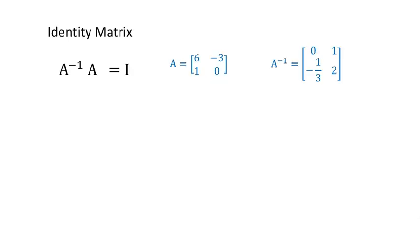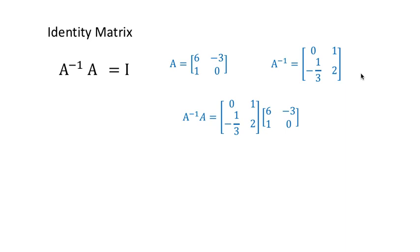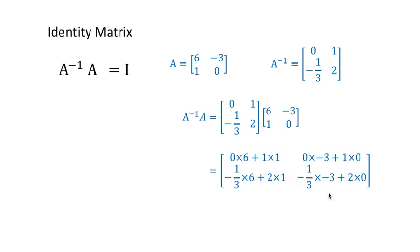Now let's just see how this works. Here's a matrix, there's its inverse. Using the inverse formula, you can see how I've switched them around, made them negative, divided by the determinant. So there's A and A inverse. A inverse times A — row times column, row times column, row times column, row times column. When you work all that out, you get 1, 0, 0, 1. Pause the video and have a look at that more closely if you need to.